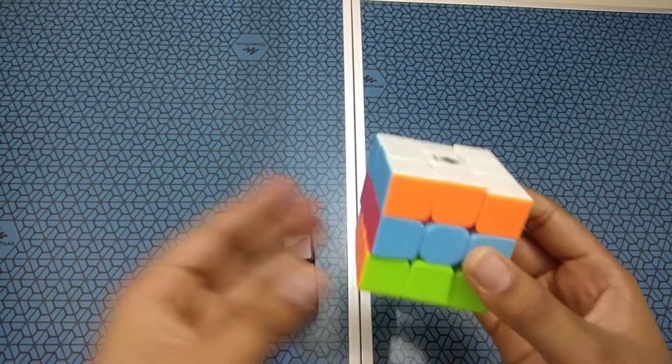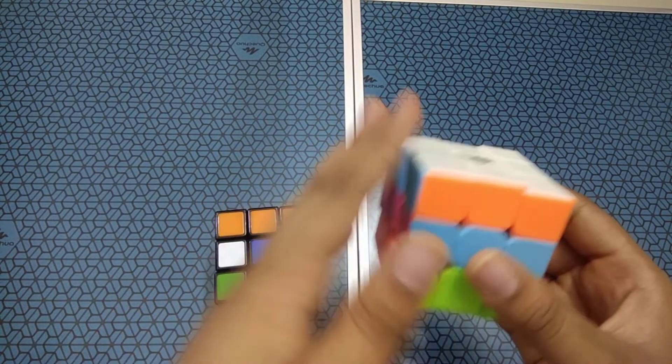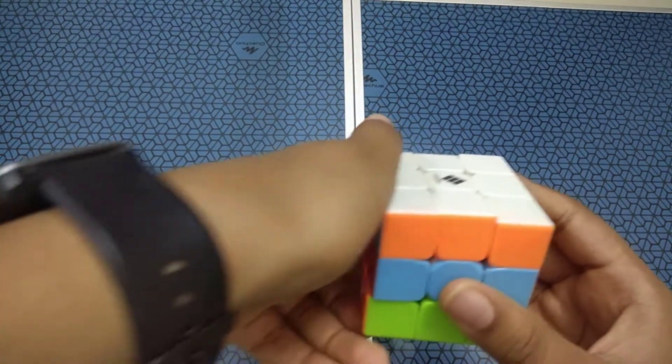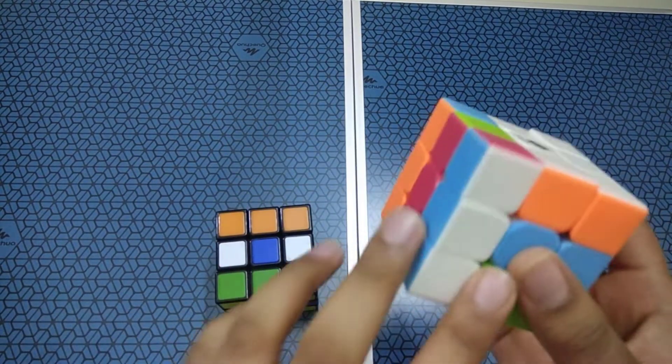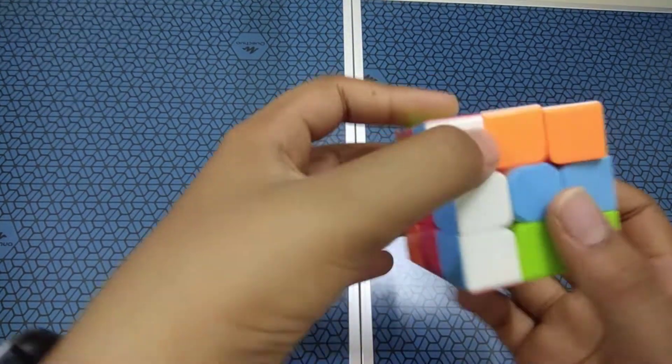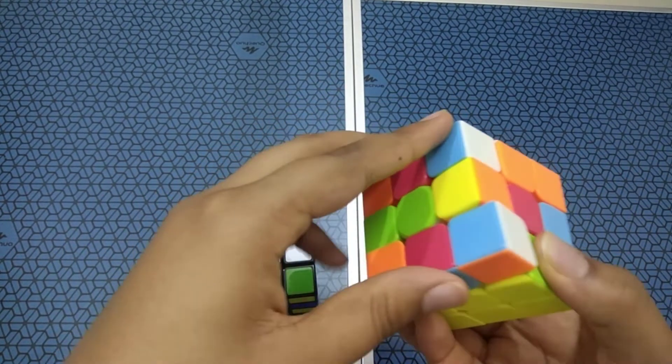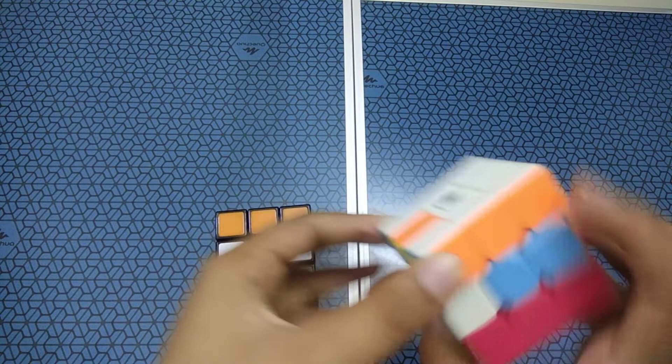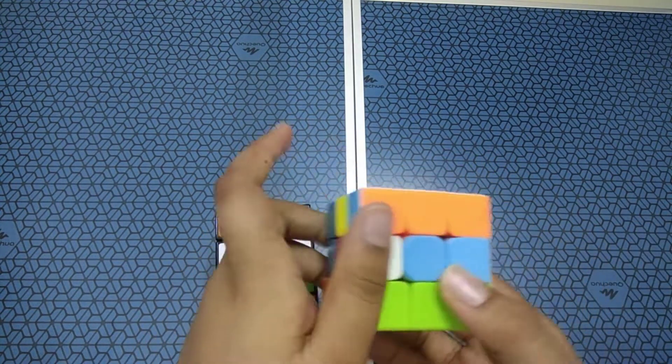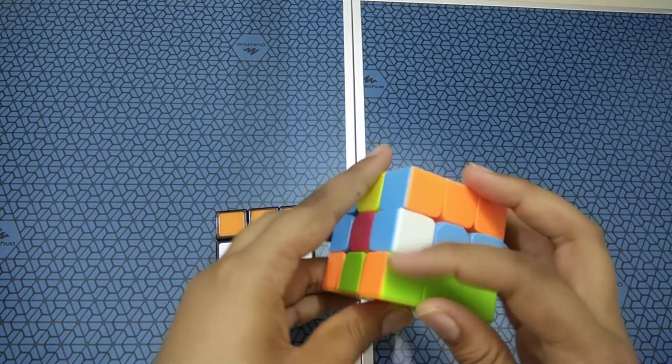Once the green comes, then what you have to do is let this left layer just turn it down, okay. And let this blue and white go here, something like this, and then up. And again bring this blue and white here back. So as you can see, the white has come here.